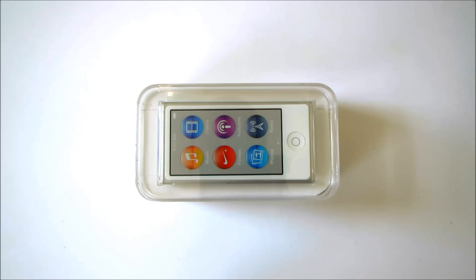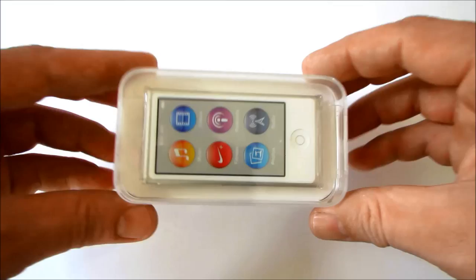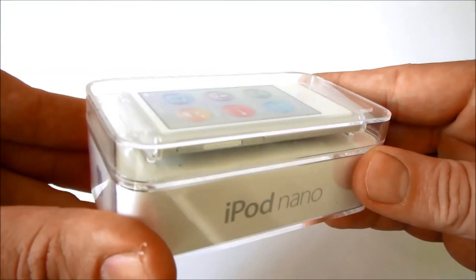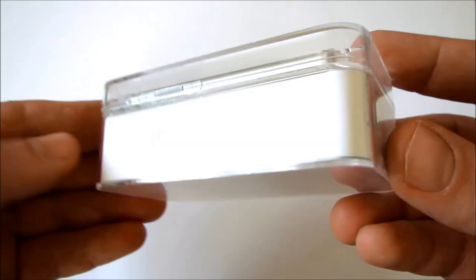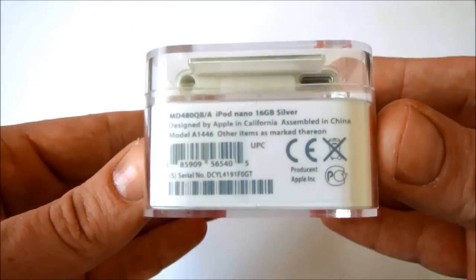This is a 7th generation iPod Nano. It's available in 7 colors and this is the silver version. At just 5.4mm thin and about the size of a credit card, the new iPod Nano is the thinnest iPod ever made.